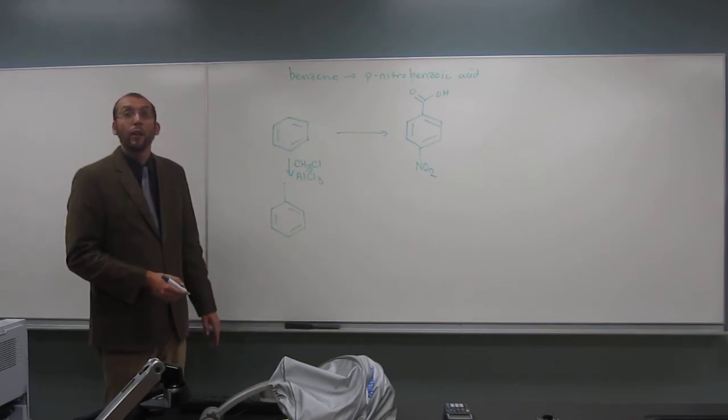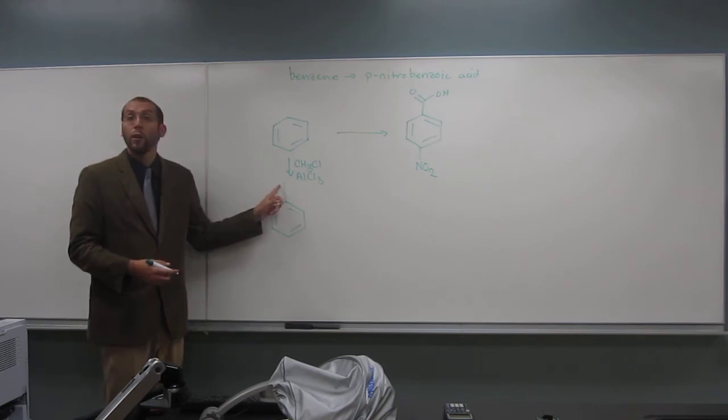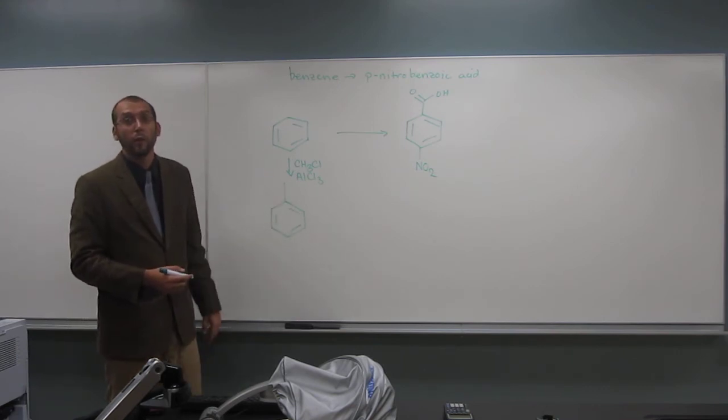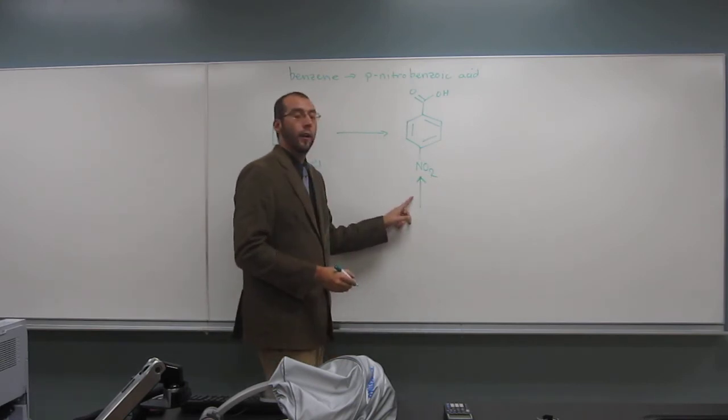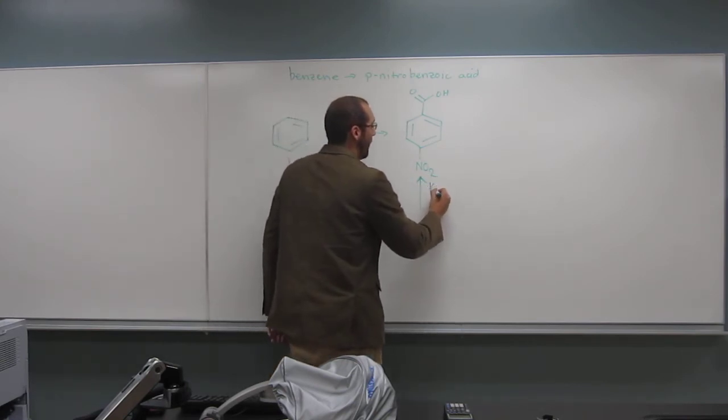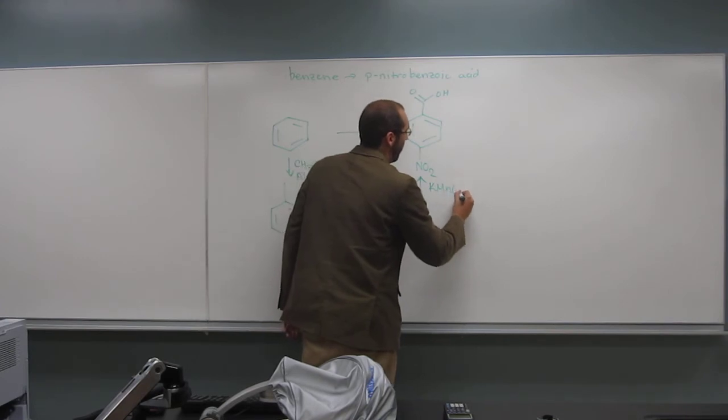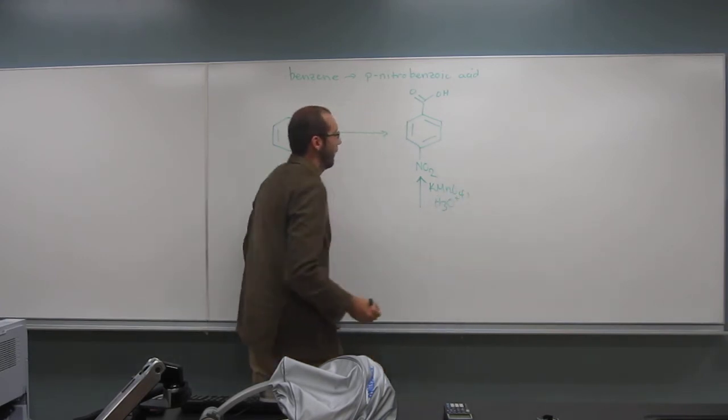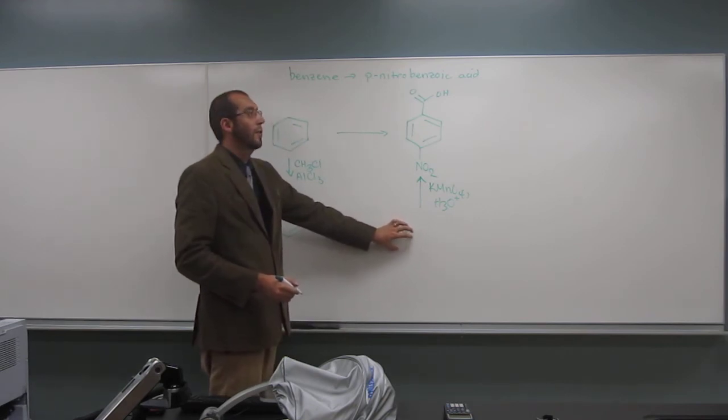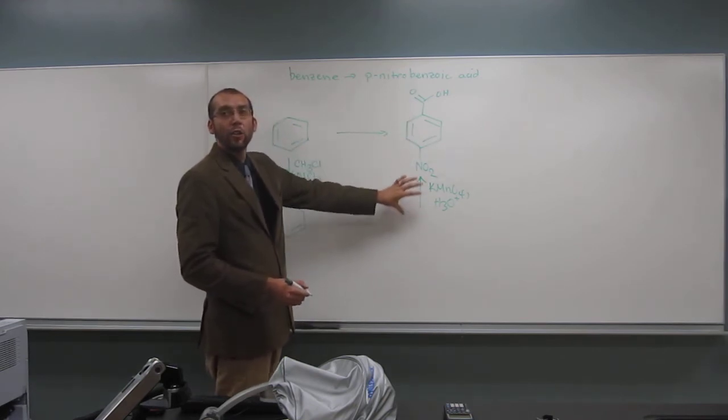Why would that have been a bad idea to oxidize with potassium permanganate now? It would make it meta. Yeah, well, because it would turn an electron donating group into an electron withdrawing group, right? So in other words, right here, what are we going to do? Put potassium permanganate and water and acid. Right, that's right.